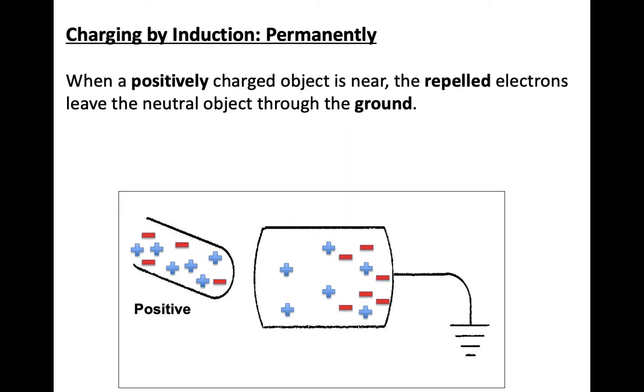Okay, so we're going to look at a different case. If we have a positive object and we bring it close to our neutral object, we're going to repel electrons leaving an induced charge separation here. And we have grounding. So we're going to look at what happens here.